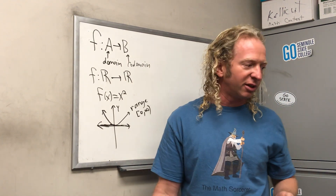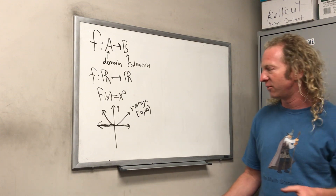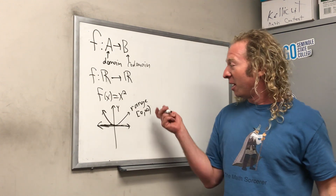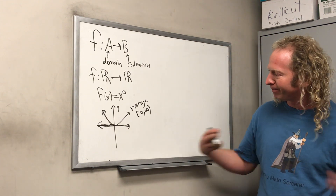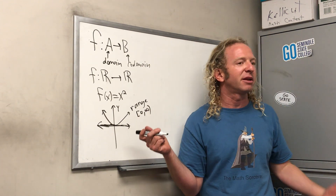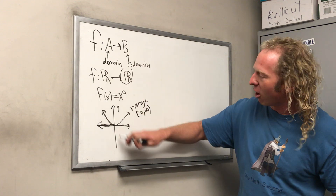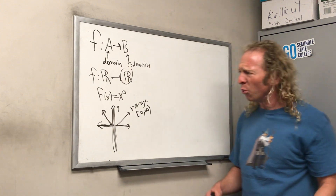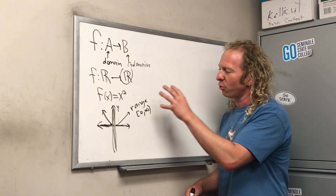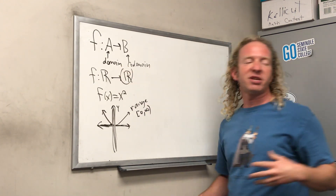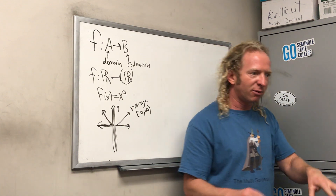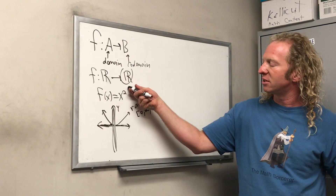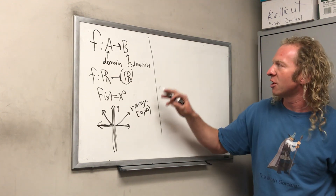I used to have a teacher who went to Harvard and Brown — he was really good. He said we don't use the word 'range' in his classroom, because range can mean a lot of things in mathematics. The codomain would be all of ℝ, and the range is a subset of the codomain. Whenever the range equals the codomain, we say the function is onto or surjective — but we'll talk about that later. So that's domain and codomain.